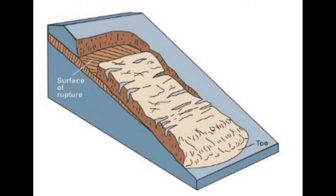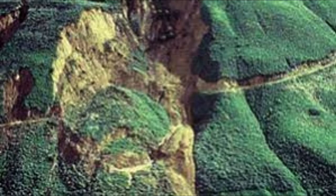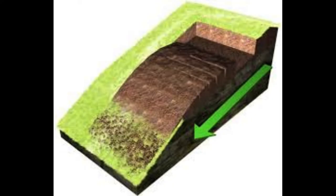To minimize the risk of translational landslides, it is important to avoid building structures on steep slopes, to stabilize slopes using retaining walls and other measures, and to monitor slopes for signs of instability. Taking these precautions can reduce the likelihood of landslides and their associated impacts, ensuring the safety of those living in areas prone to translational landslides.